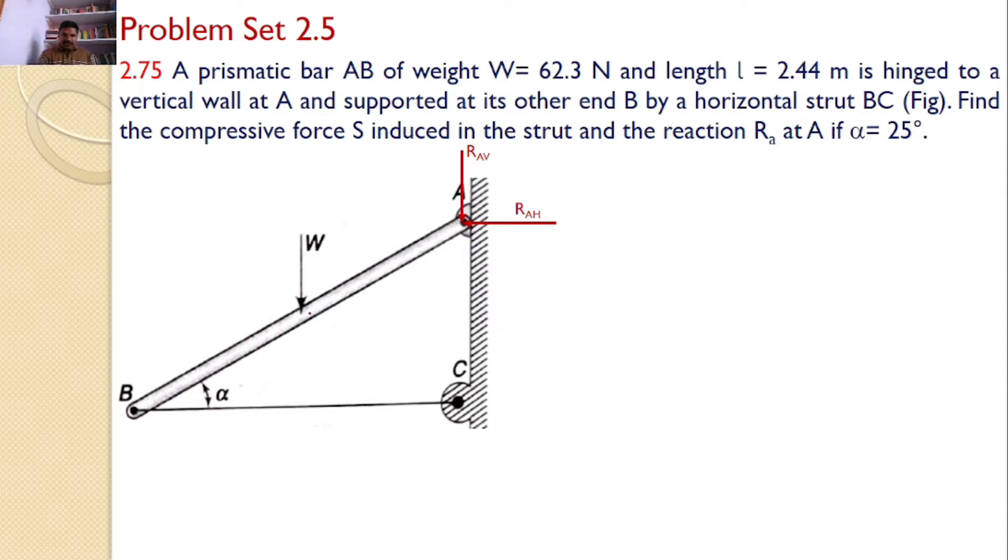And there is a self weight W and there is a string. The string will introduce a force S along the strut and it is away from. Initially we are assuming it is a tensile force. If we get negative at the end, that means it is a compressive force.